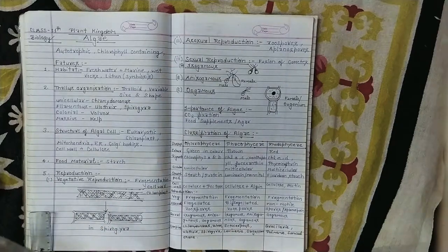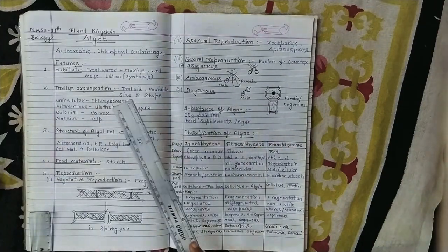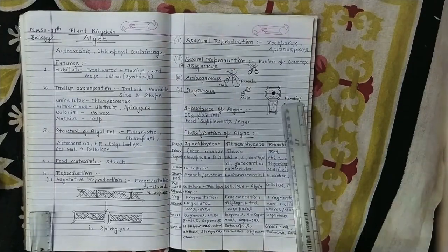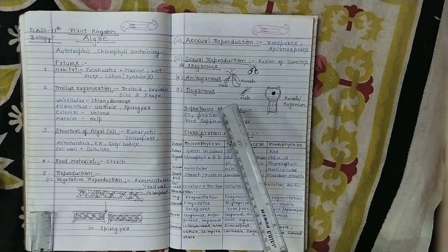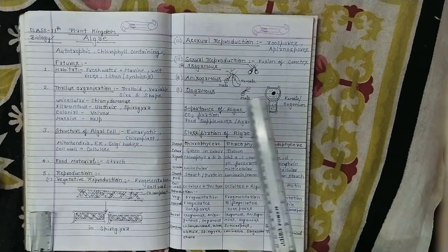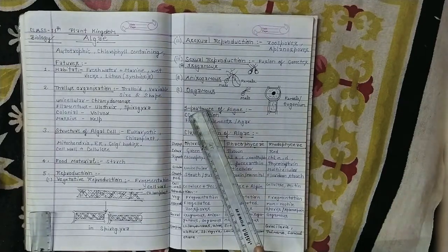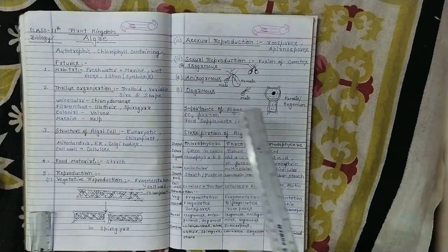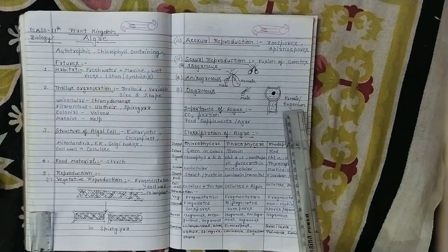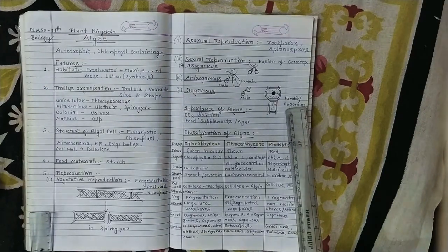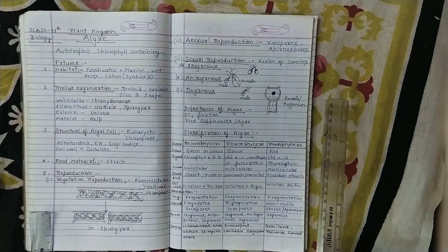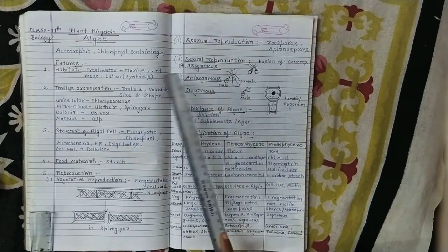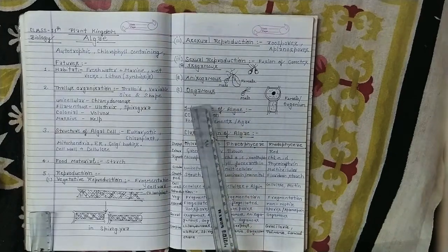Third is oogametes. The structure is completely different. The male structure is this and female structure is different. The two different structures are different. In oogametes, male is small, flagellated, and motile. The female size is large, non-flagellated, and non-motile. Female is oogametes. So we have isogametes, anisogametes, and oogametes.